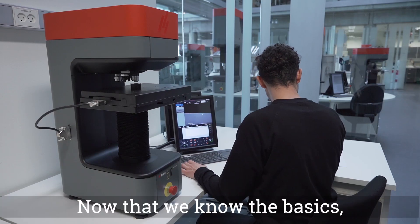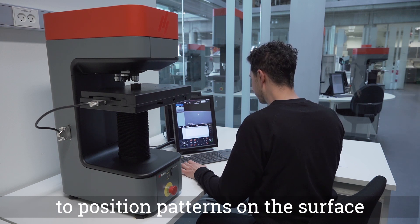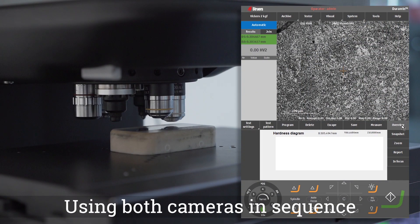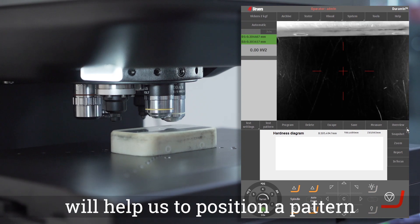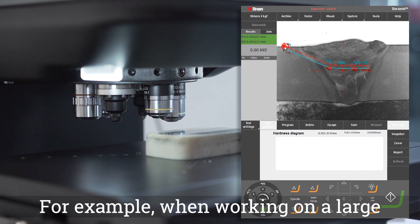Now that we know the basics, let's have a look at 10 interesting methods to position patterns on the surface of a sample. Using overview and objective camera in sequence. Using both cameras in sequence will help us to position a pattern in a quick and effective way.